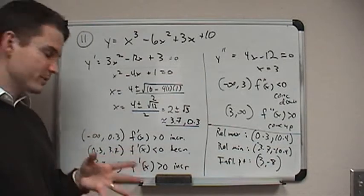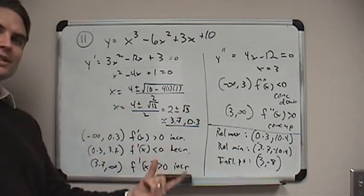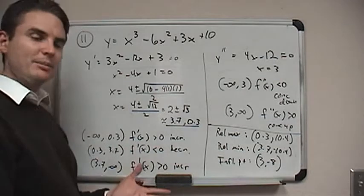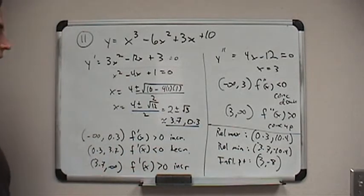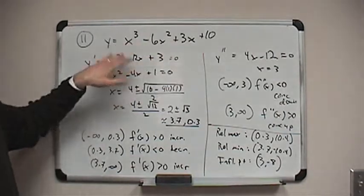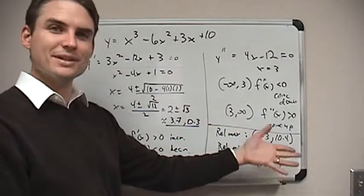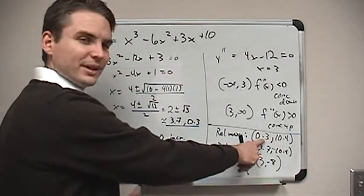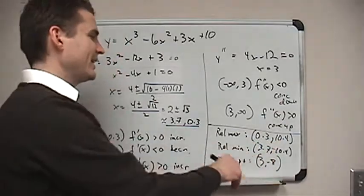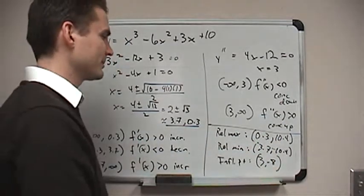Now, the next critical number is also important for us, 3.7, where the function changes from decreasing to increasing. So when that happens, we know that there's going to be a minimum when x is 3.7. So I put 3.7 in for x, and I turned out to see what y is, and it was negative 10.4. So we've got a relative maximum at 0.3 comma 10.4, a relative minimum at about 3.7, negative 10.4.